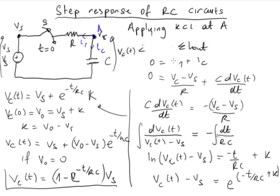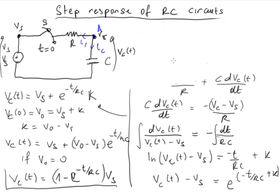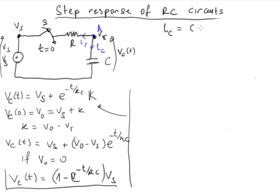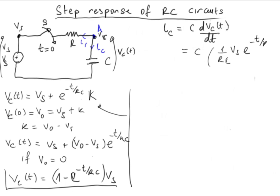Now let's look at the current. iC is C times dvc(t)/dt. Differentiating the voltage expression with respect to t gives us C times (1/RC) times VS times e raised to (negative t over RC), which simplifies to (VS over R) times e raised to the power (negative t over RC). So this is the expression for iC.